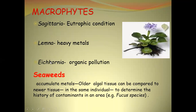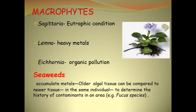Macrophytes such as Sagittaria — Ipomoea growth is found where heavy metal pollution is present, because Ipomoea is an absorber of heavy metals. If you visit East Kolkata wetland or any static water body, Ipomoea will be present. Ipomoea indicates heavy metal pollution. Sagittaria grows in eutrophic areas. Seaweeds also accumulate metals — for example, Fucus species.